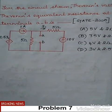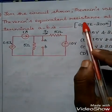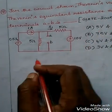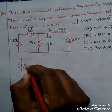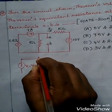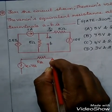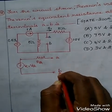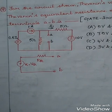Problem number 7. This was asked in the 2005 GATE paper. The problem is to find Thevenin's voltage and Thevenin's equivalent resistance — that is, Thevenin's voltage Vth and Thevenin's resistance Rth across the terminals A and B. Find the value of Vth and Rth.